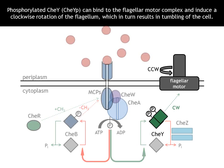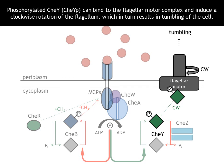Phosphorylated CheY, CheYP, can bind to the flagellar motor complex and induce a clockwise rotation of the flagellum, which in turn results in tumbling of the cell.